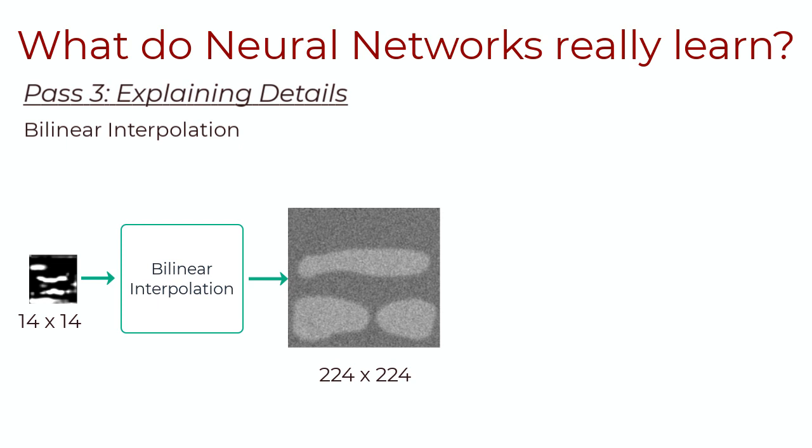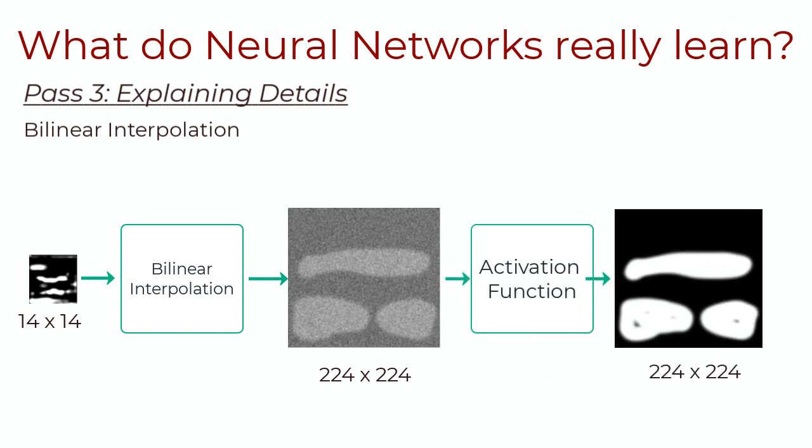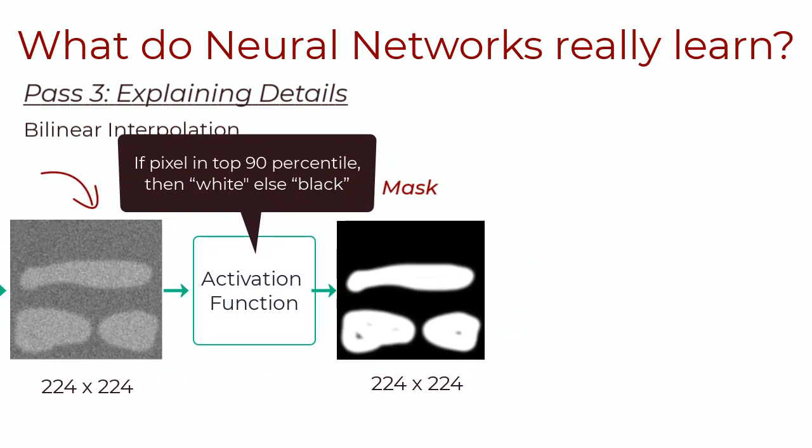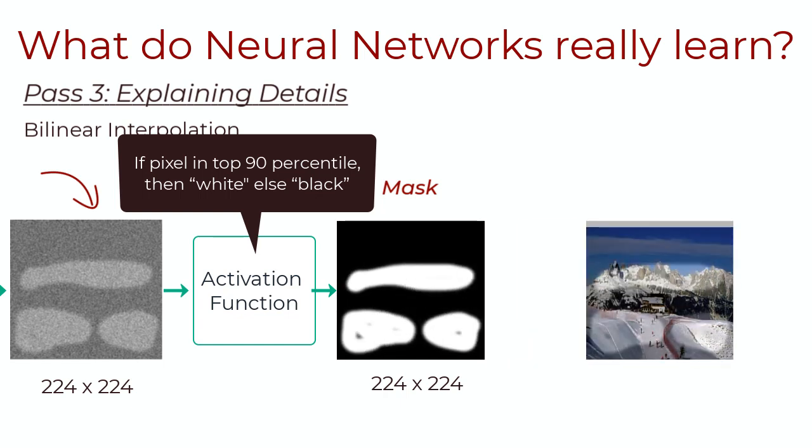Now that we have a 224x224 upsampled filtered output, we want to convert it to a mask and apply this on the image. And this can be done with the simple activation function. A mask is black and white. It has values of either 0 or 1. So, we take all the 224x224 pixel values, arrange them in ascending order, and determine the pixel that is greater than 90% of the other pixels, and use this as a threshold. If a pixel is in the lower 90%, it becomes 0. If it is in the greater 90%, it becomes 1. And so, we end up with a mask. Now, we apply this onto the image to see what parts of it are being recognized by the filter. And voila! So, we're able to see semantically what is being detected in the image by this filter.